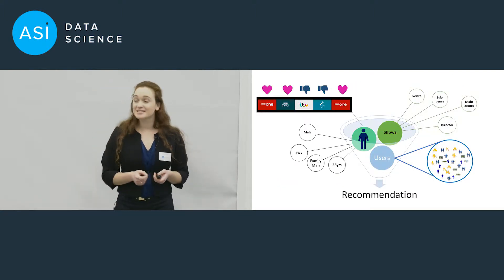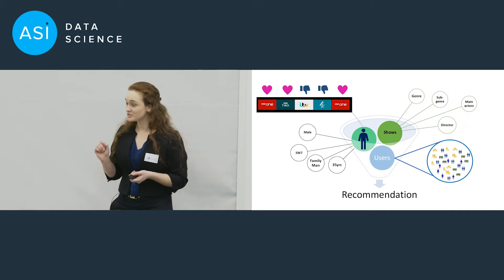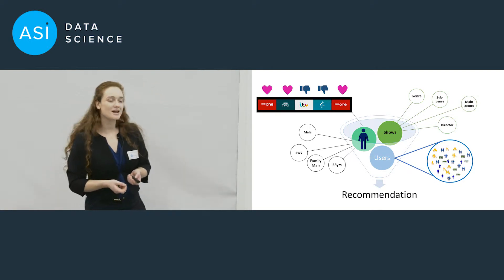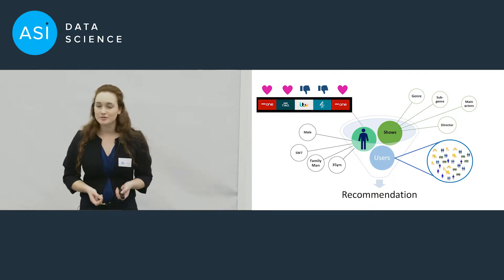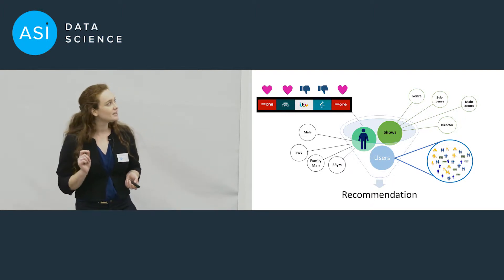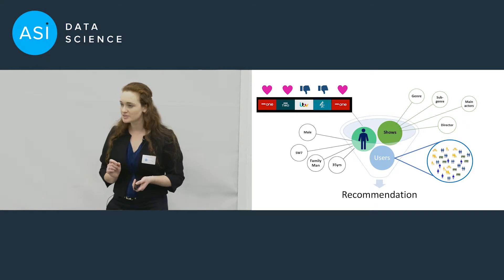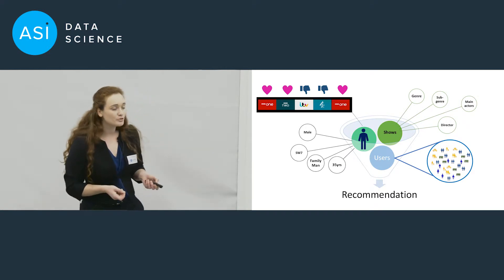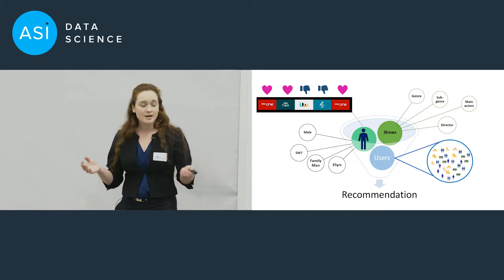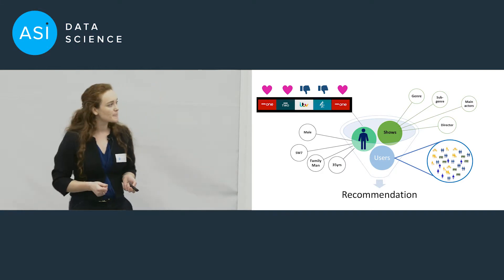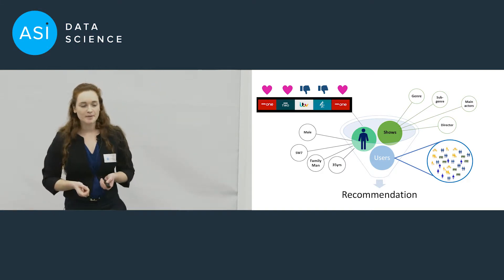However, recommendation engines are really, really tricky. In an ideal world, you would have a lot of information — for example, you'd have user demographic data, you'd know exactly what your users like to watch in terms of content, you'd know a lot about the shows: director, genre and things like that. And you'd have a huge user base.